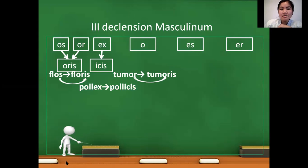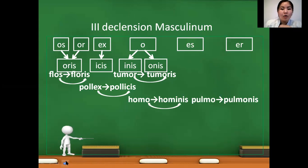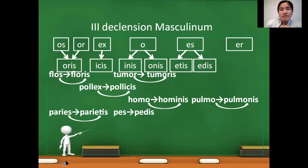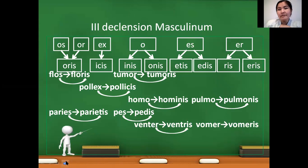For ending O, genitivus ending is related to the number of letters in the word. Words ending with O and containing even number of letters, we use genitivus ending inis: homo, hominis. For words containing odd number of letters we use onis: pulmo, pulmonis. Same situation with ES - we change to atis for even number of letters like paries to parietis. Odd number of letters, we use edis: pes to pedis. For ER ending, even number of letters we use ending ris: venter, ventris. For odd number of letters we use eris: vomer, vomeris.